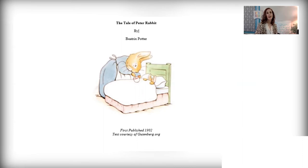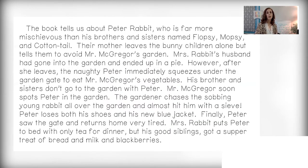Thank you for writing your summary using your notes and vocabulary words. Your summary may have said something like: the book tells us about Peter Rabbit, who is far more mischievous than his brothers and sisters named Flopsy, Mopsy, and Cottontail. Their mother leaves the bunny children alone, but tells them to avoid Mr. McGregor's garden. Mrs. Rabbit's husband had gone into the garden and ended up in a pie. However, after she leaves, the naughty Peter immediately squeezes under the garden gate to eat Mr. McGregor's vegetables.